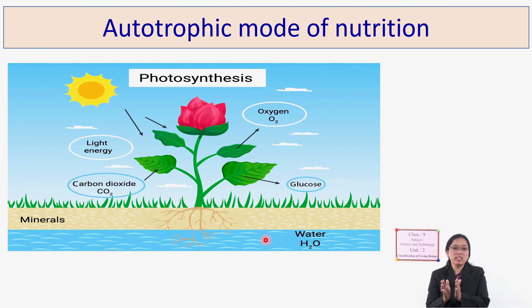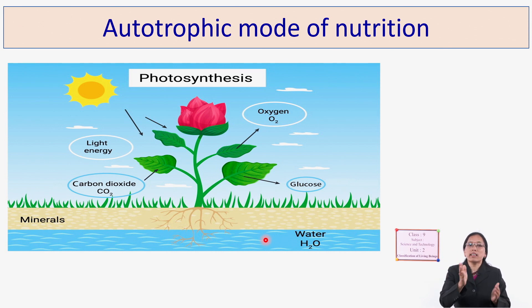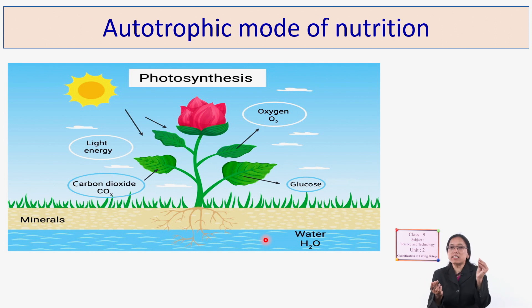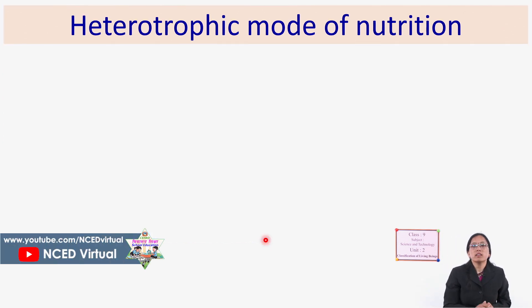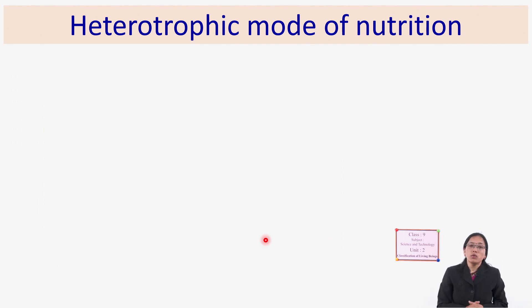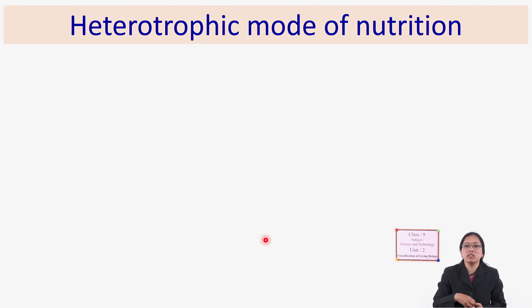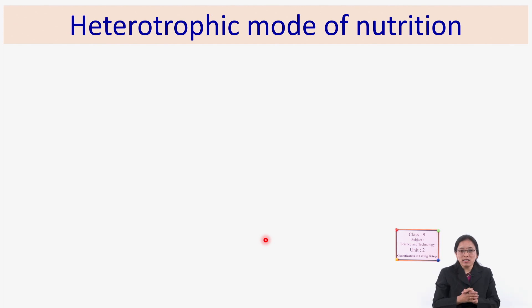Heterotrophic mode of nutrition means the organism is unable to prepare its own food and depends on others. Even among heterotrophs, the process of taking food differs. They are classified into various types: holozoic nutrition, parasitic nutrition, and saprotrophic nutrition.